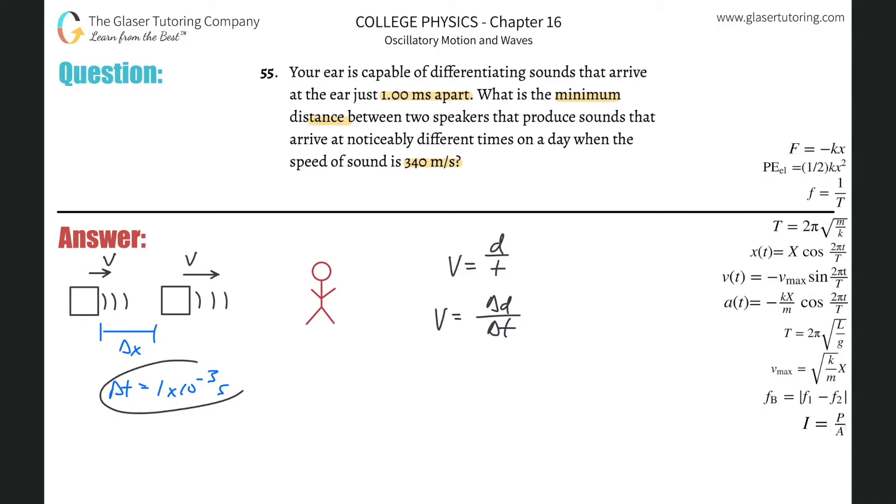So now we know the change in time between the two waves. The difference in time is going to be one millisecond, and we know the velocity of the wave. So can't we just calculate delta D, or the change in distance?